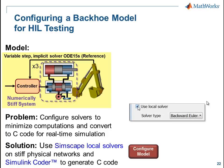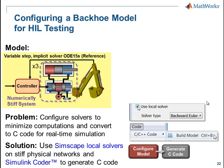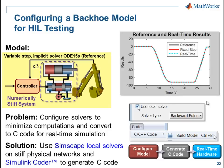First, we'll configure the model to use the Simscape local solvers on the numerically stiff portions of the system. Next, we'll generate C code from the model using Simulink Coder. Finally, we'll download it to the real-time hardware and run the simulation. We will see that the results when configured for real-time simulation match our reference results very well, and the model runs without overruns on our real-time target. I'll now switch over to the model so you can see how this is done.